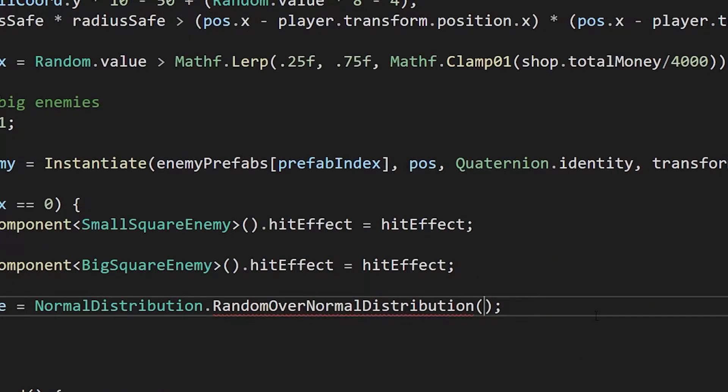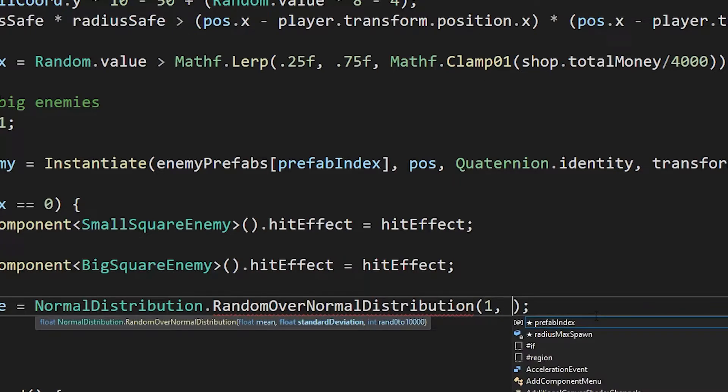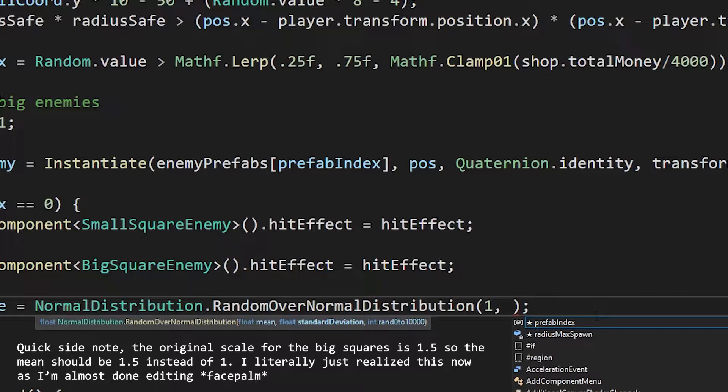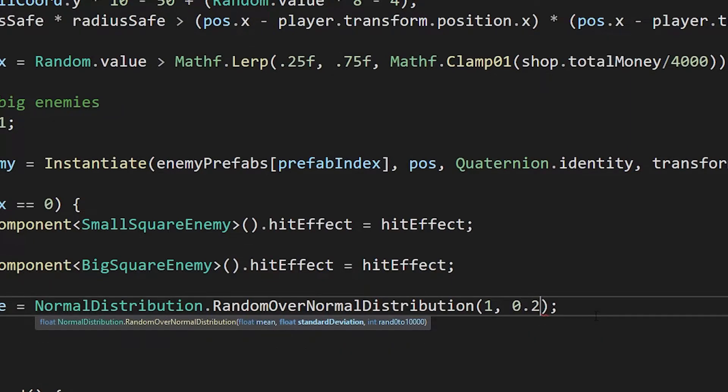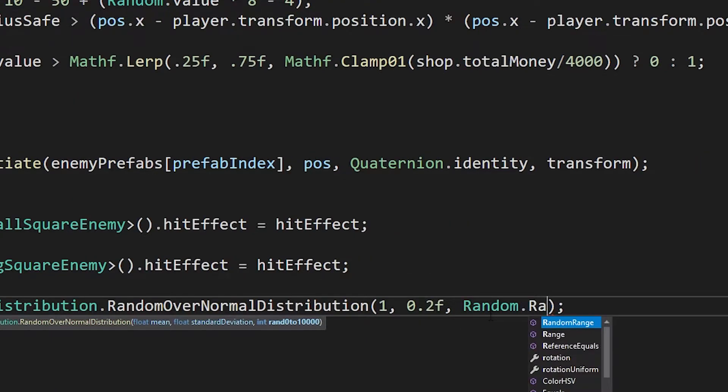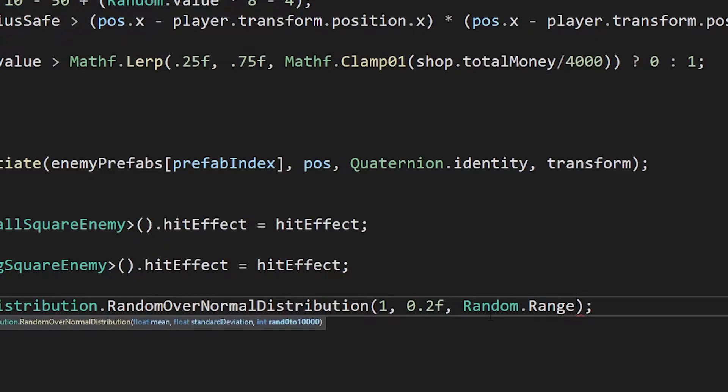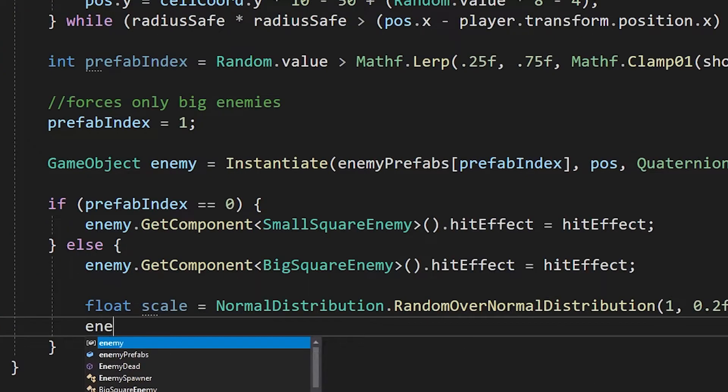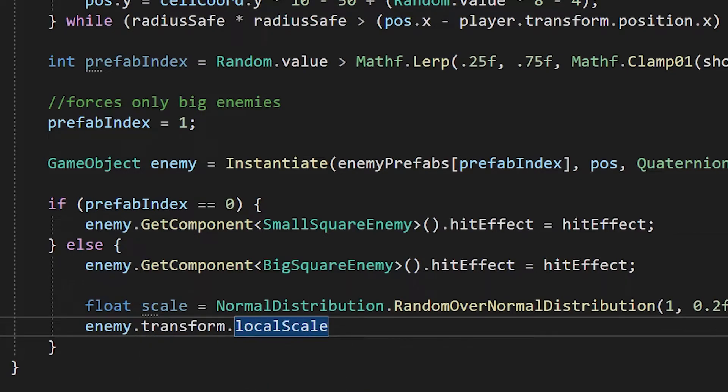I want to have the average size the same of what they already are, so I'll set the mean equal to 1, and I think I'll have 68% of them have a scale between 0.8 and 1.2, so I'll set the standard deviation to 0.2. Then I'll pass in random dot range ranging from 0 to 10,001 as the last argument to generate a random integer from 0 to 10,000. Then I'll set the transform dot local scale equal to a new vector 3 with the scale variable for the x, y, and z components.